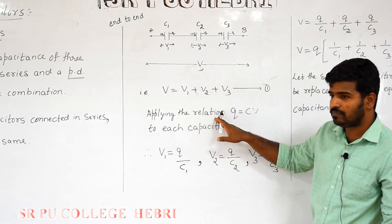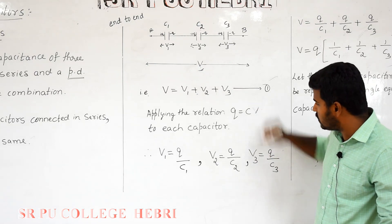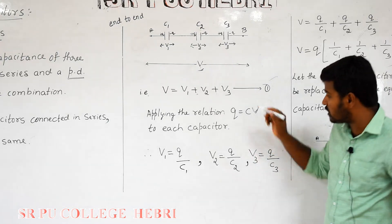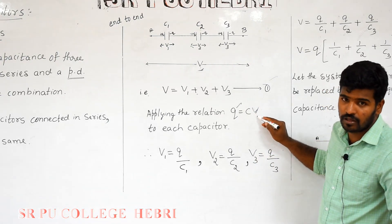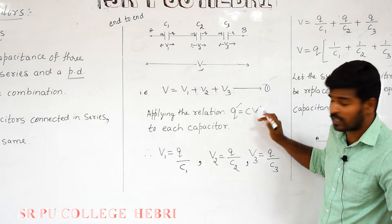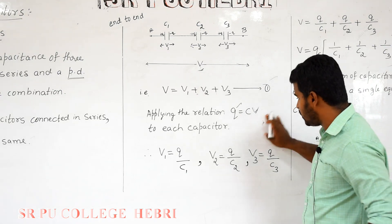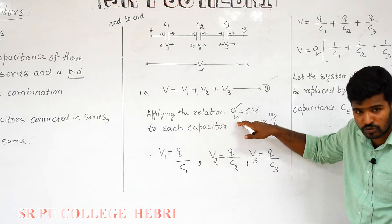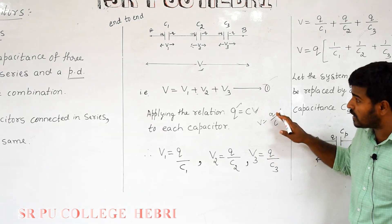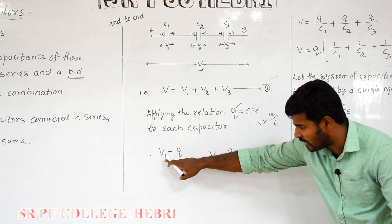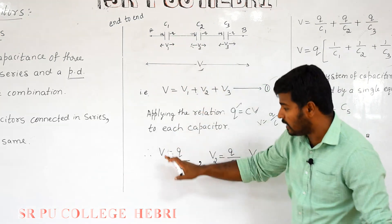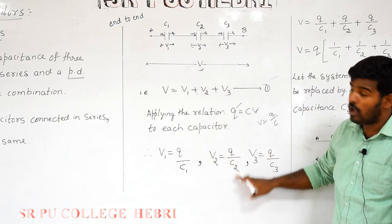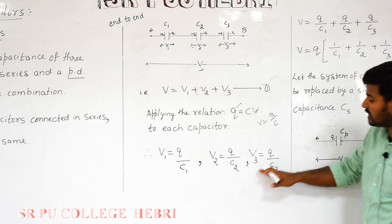Applying the relation Q = CV — the charge given to the conductor is directly proportional to the potential difference — we rearrange to get V = Q/C. Applying this to each capacitor: V1 = Q/C1, V2 = Q/C2, V3 = Q/C3. Note it is not Q1, Q2, Q3 — it is Q throughout, because the charge on each capacitor is the same.